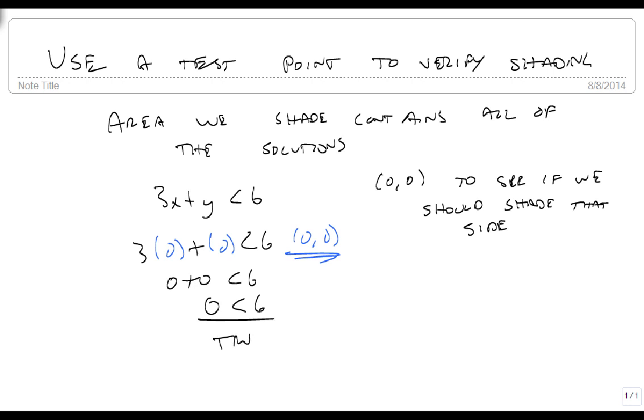Since that's true, that means we would shade around the point. So whatever region we're in, that's the region that gets shaded. If it had come out false, then we wouldn't shade.